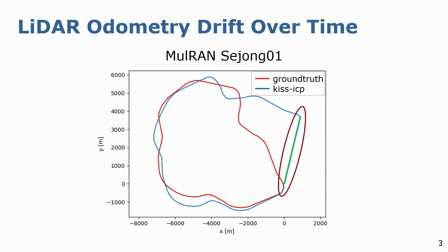However, if we can detect revisited places or loop closures — which in this case corresponds to the beginning and the end of the sequence as seen from the ground truth — we can establish geometric pose constraints between the revisited locations. These loop closure constraints are useful to reduce the global drift through pose graph optimization.